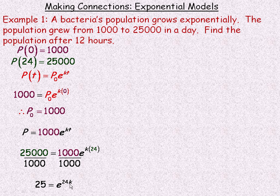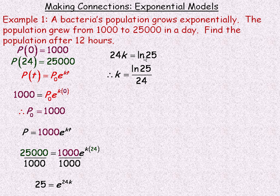To solve for k, we convert to equivalent logarithmic form: the exponent 24k equals the natural log of 25, since the base is e. Dividing by 24, k = ln(25) / 24. Substituting that in gives us our formula.